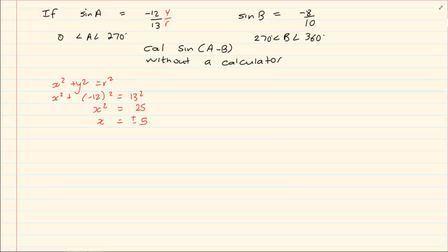Now we need to see our restriction. We have that sin is negative and we know that A runs from 0 to 270 which means I am in the third quadrant. In the third quadrant x is negative. So our final answer is x is equal to negative 5.